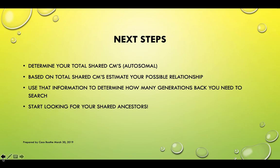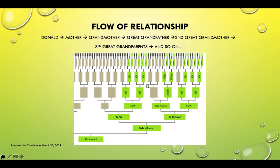Say I know that based on centimorgans, Donald and Dorothy are third cousins — then I count: third cousins, second cousins, first cousins, siblings — and that points me to the ancestor I'm trying to identify.